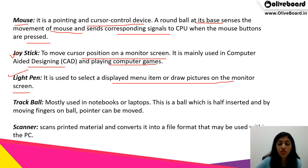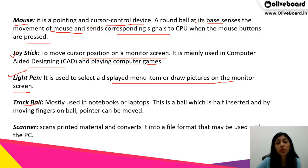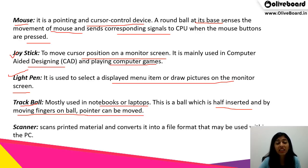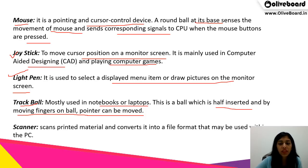Next is the track ball. It is basically used in notebooks or laptops. It is a ball which is half inserted, and by moving fingers on the ball, the pointer can be moved. It is like a device on which we can move our fingers and things get moved on the screen.